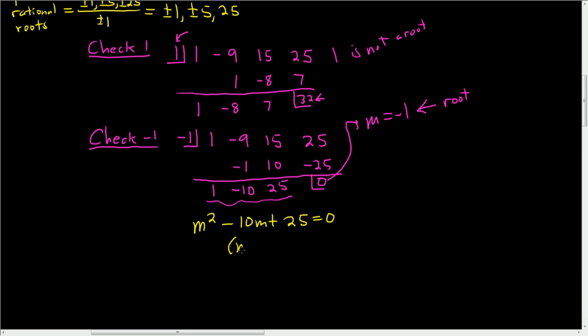This looks like it factors, looks like m minus 5, m minus 5. Yep, because negative 5m and negative 5m give you the middle piece. And negative 5 times negative 5 is positive 25, and m times m is m squared. So this is really m minus 5, quantity squared, equal to 0.